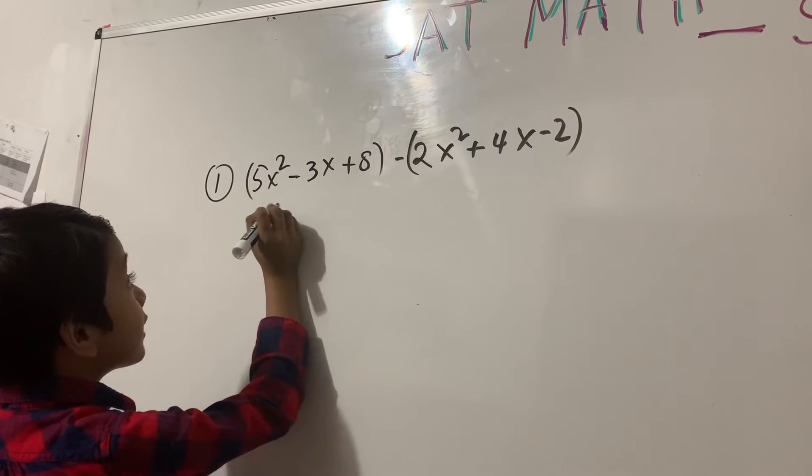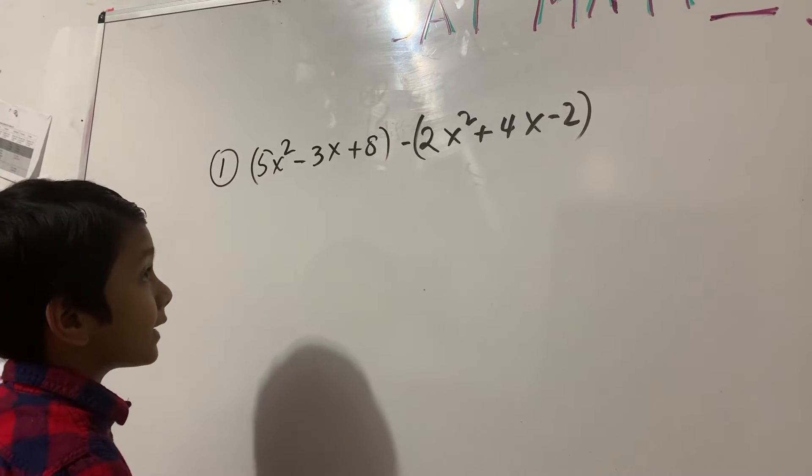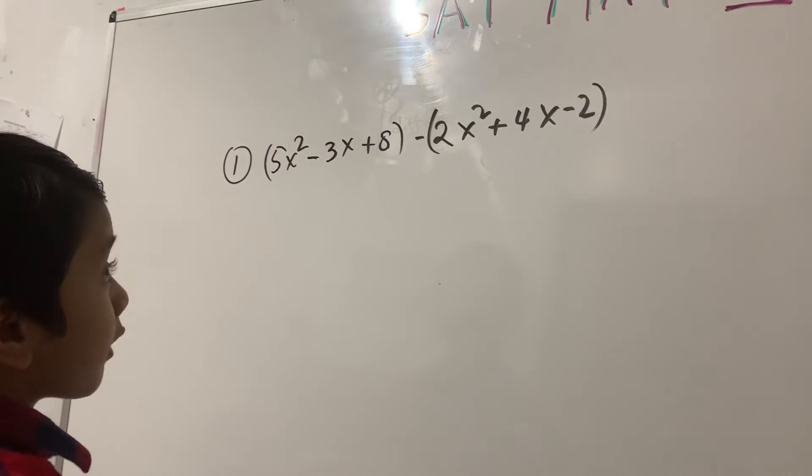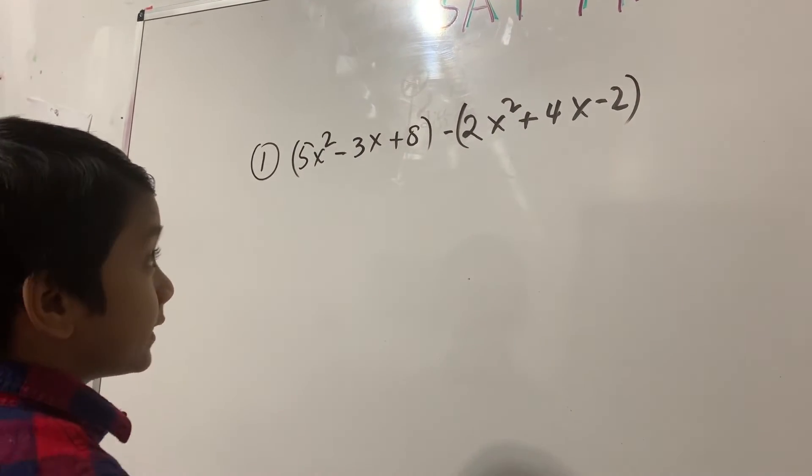So, 5x squared minus 3x plus 8 in parentheses, minus 2x squared plus 4x minus 2 in parentheses.